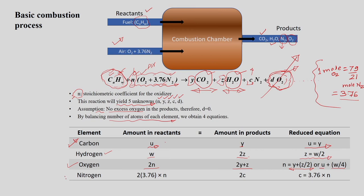For nitrogen: although nitrogen does not participate in the reaction, we still need to balance it since it depends on the moles of air used. In the reactant, we have 2×3.76×N moles of nitrogen. In the product, we have C moles (represented as 2C). Equating gives C = 3.76N.